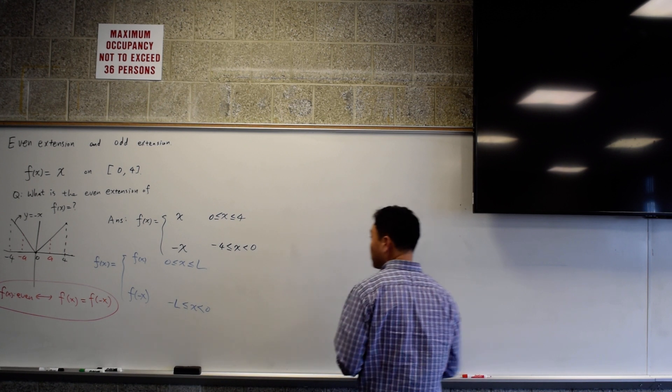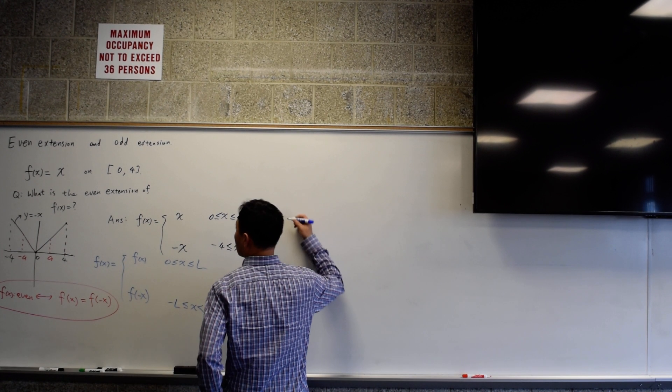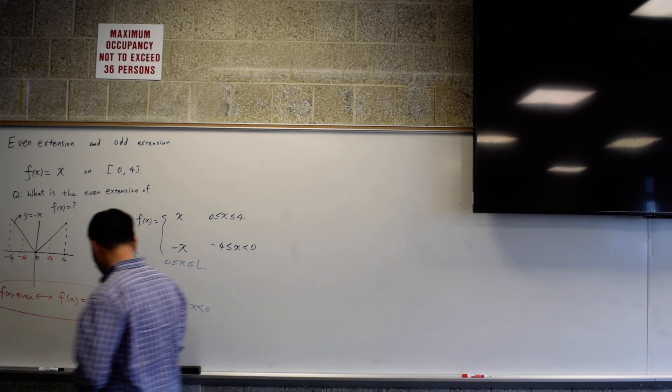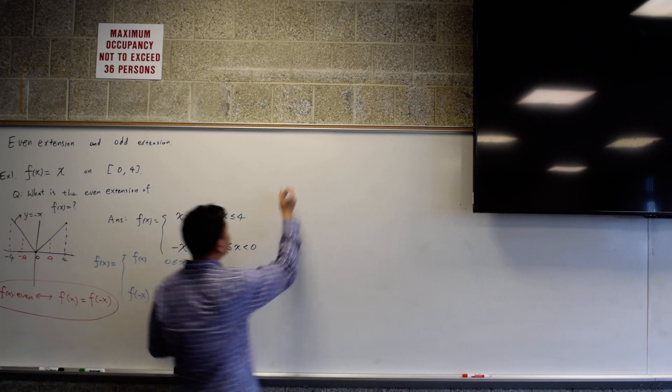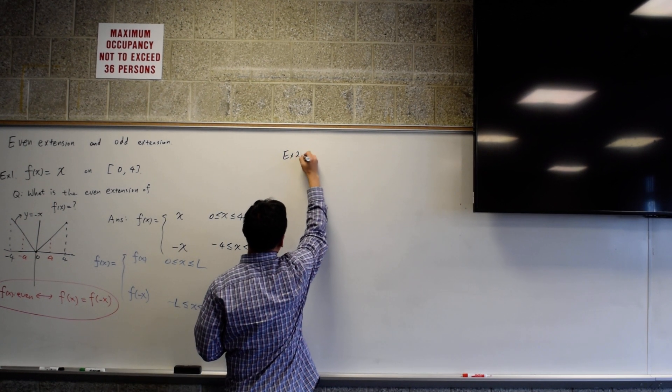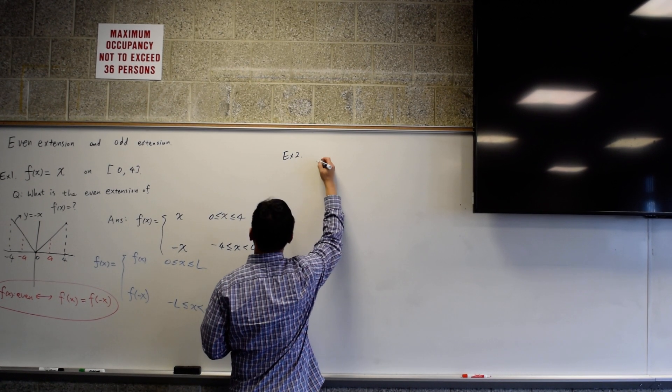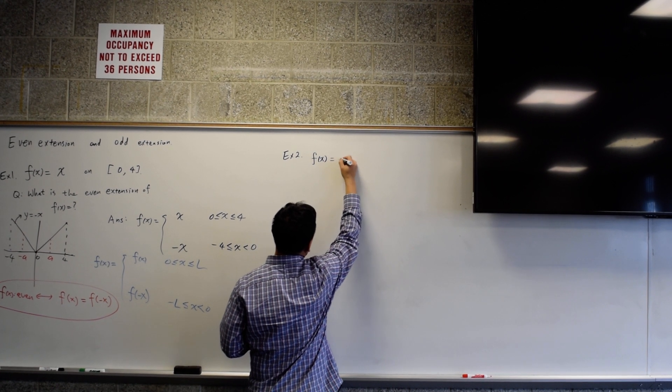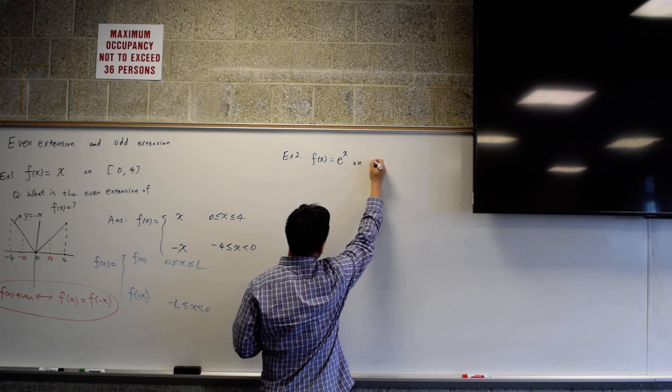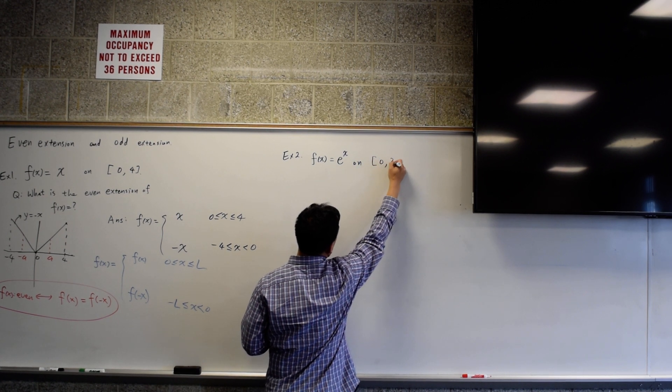So here's another example. Let's say this is example one. What if you had example two. What if you want f of x equal to e to the x on, say, 0 to 3?